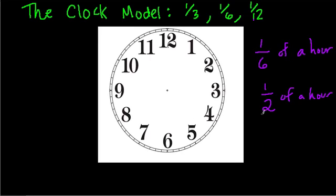Using this clock model, we can turn these into minutes. One-sixth - what would that be? There are 60 minutes in a clock. Break them into six parts and we get 10 minutes: 10, 20, 30, 40, 50, and 60.